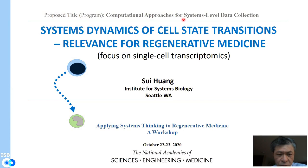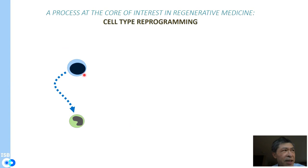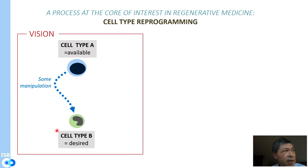I'm going to talk about systems dynamics of cell state transitions and why it is relevant for regenerative medicine, and focus on single-cell transcriptomics to show some data there. Everybody wants to reprogram cells from one cell type to another — as you just heard from Peter's talk — with the vision of going from iPSC cells to a neuron, or from pancreas alpha cells to beta cells useful for diabetes treatment.